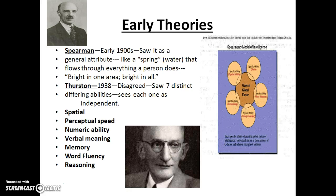A side note on theories that have a specific list of abilities they think are part of intelligence: anytime somebody gives a specific list, it can immediately be criticized for leaving something out, having something in there that doesn't belong, not having enough, or having too many. That's one of the criticisms you'll hear about Thurston's theory and others we'll talk about very soon.